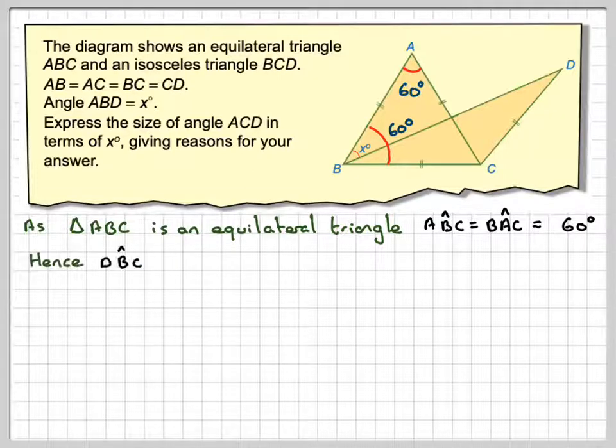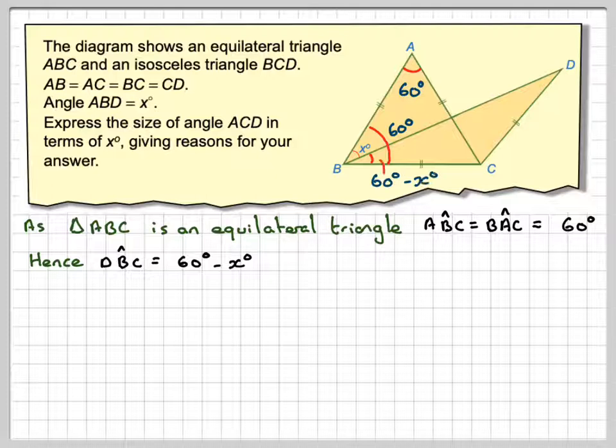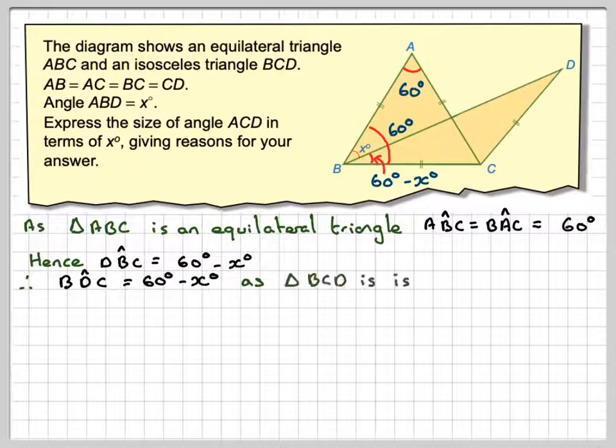Now, hence, angle DBC, so this angle here, is going to be equal to 60 minus X. So this angle here is 60 minus X, which also means that angle BDC is also 60 minus X, as this triangle here is isosceles.